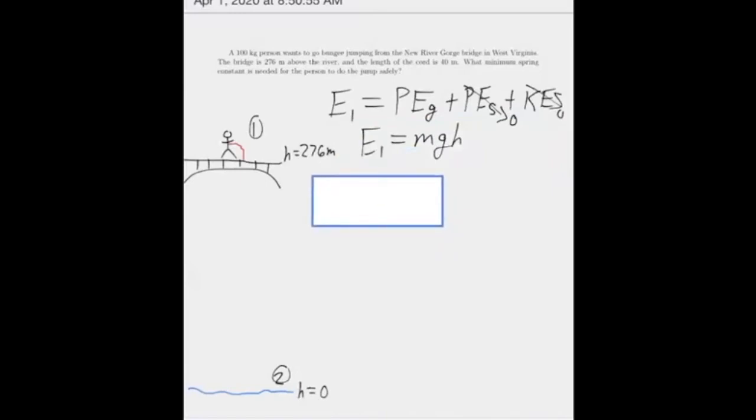All right. So I'll give you a minute to work on your own. Try writing out what types of energy would be present when the person is at point two. All right. So you can include all of them, all of the three types, but then decide which of those would be equal to zero.